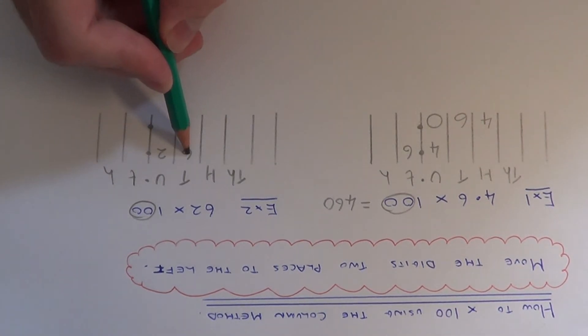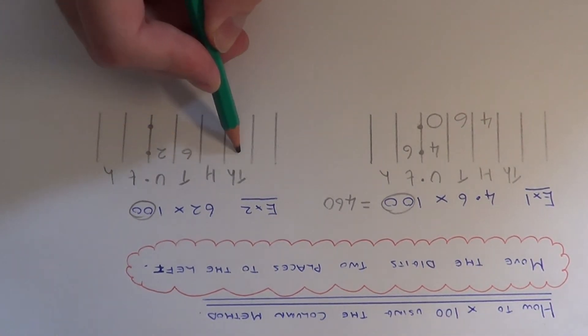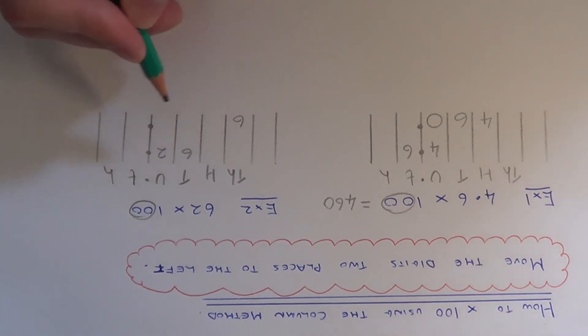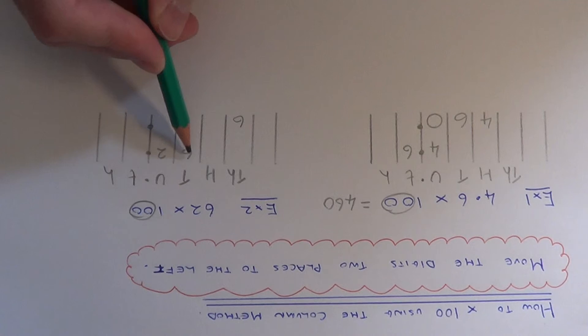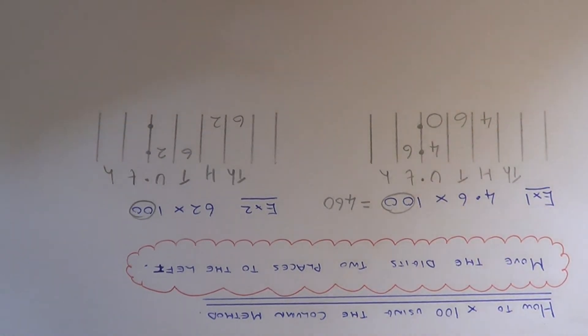If we move the 6 two columns to the left: one, two, so the 6 will go in the thousands column. Move the 2 two places left: one, two, so the 2 will go in the hundreds column.